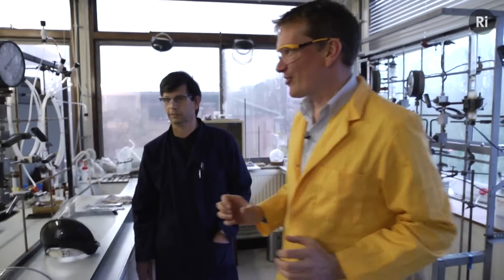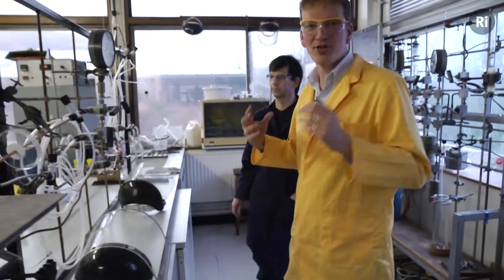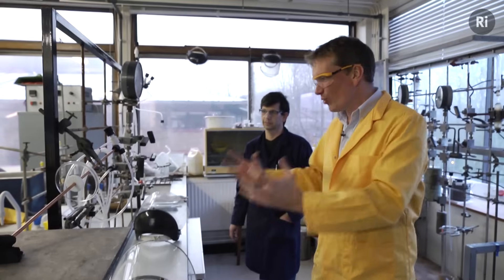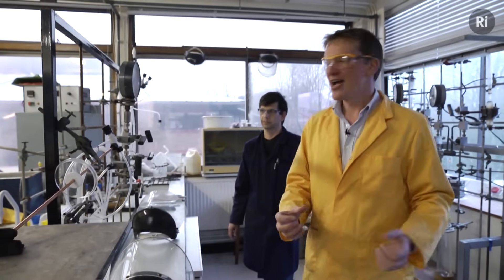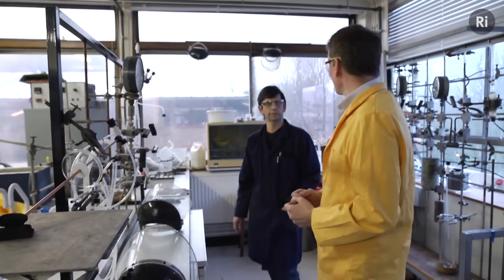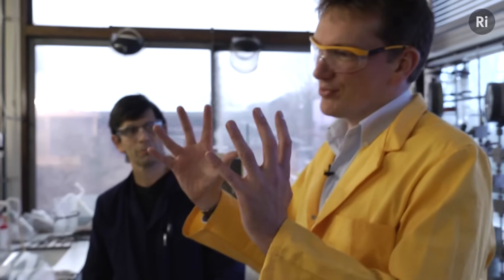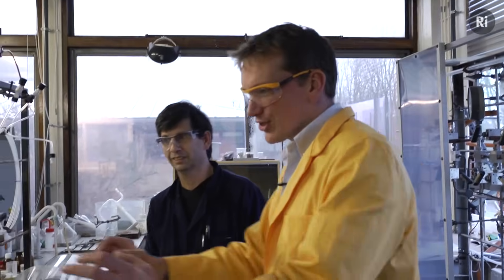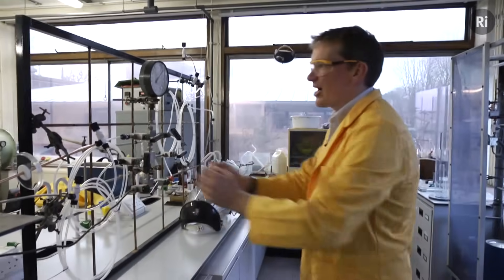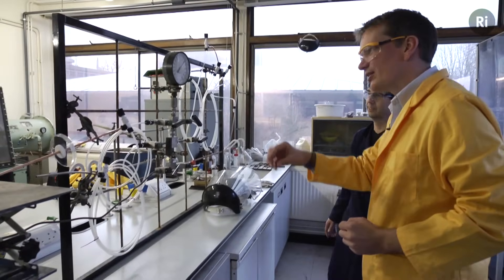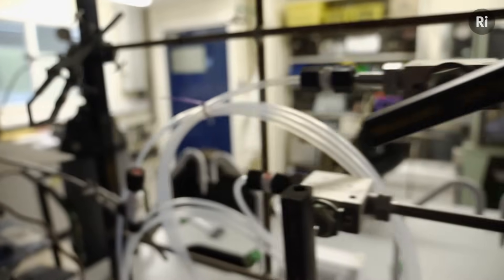Now we've designed this apparatus with quite a lot of thought. One of the problems here is that we want to do this at the RI, and transporting fluorine is a little bit tricky. It reacts vigorously, as we will see, with virtually any element in the periodic table. Eric's come up with this fantastic idea of just filling the coils in the apparatus, this plastic tubing that's been sensitized to fluorine so it's not going to react with it.